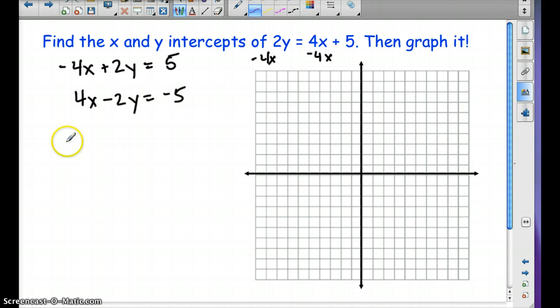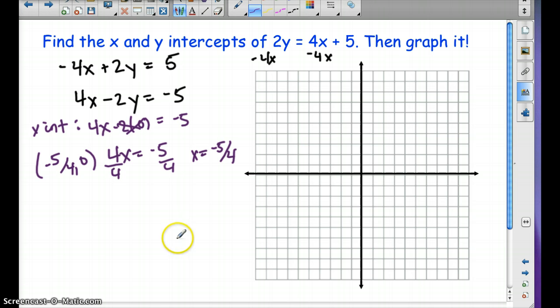So now our x-intercept, I'm going to go ahead and plug in 0 for y. And we have 4x equals negative 5, because that will just cancel out. So we divide by 4, x equals negative 5 fourths. So our x-intercept, we write it out as a point, is going to be negative 5 fourths comma 0.